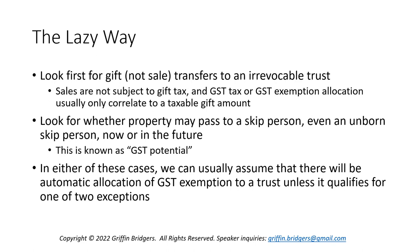First, determine whether there's a gift to an irrevocable trust. Second, look to the terms of the trust itself. Are any beneficiaries now or in the future potentially a skip person? If so, this is what's known as GST potential. Anytime you have GST potential with a trust, if it's not subject to an exception, you're going to have automatic or manual allocation of GST exemption to that trust. That trust is going to qualify as what's known as an indirect skip trust, so any transfer to it is going to be an indirect skip.